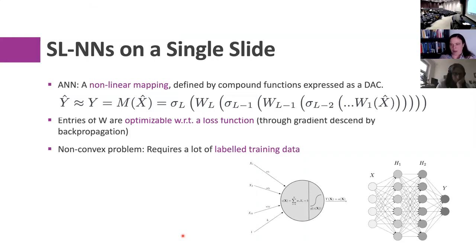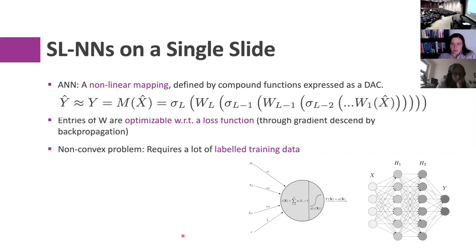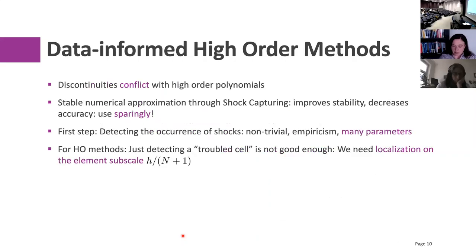I'm pretty sure you all have a background in supervised learning, so just on a single slide: what is a neural network in a supervised learning context? It's a nonlinear mapping — you stack matrices and nonlinear activation functions and concatenate them together. The matrices have weights that you train by defining a loss function, computing the gradient, and updating the weights through backpropagation — the chain rule from calculus. Usually applied to non-convex problems, supervised learning works well for a variety of problems.